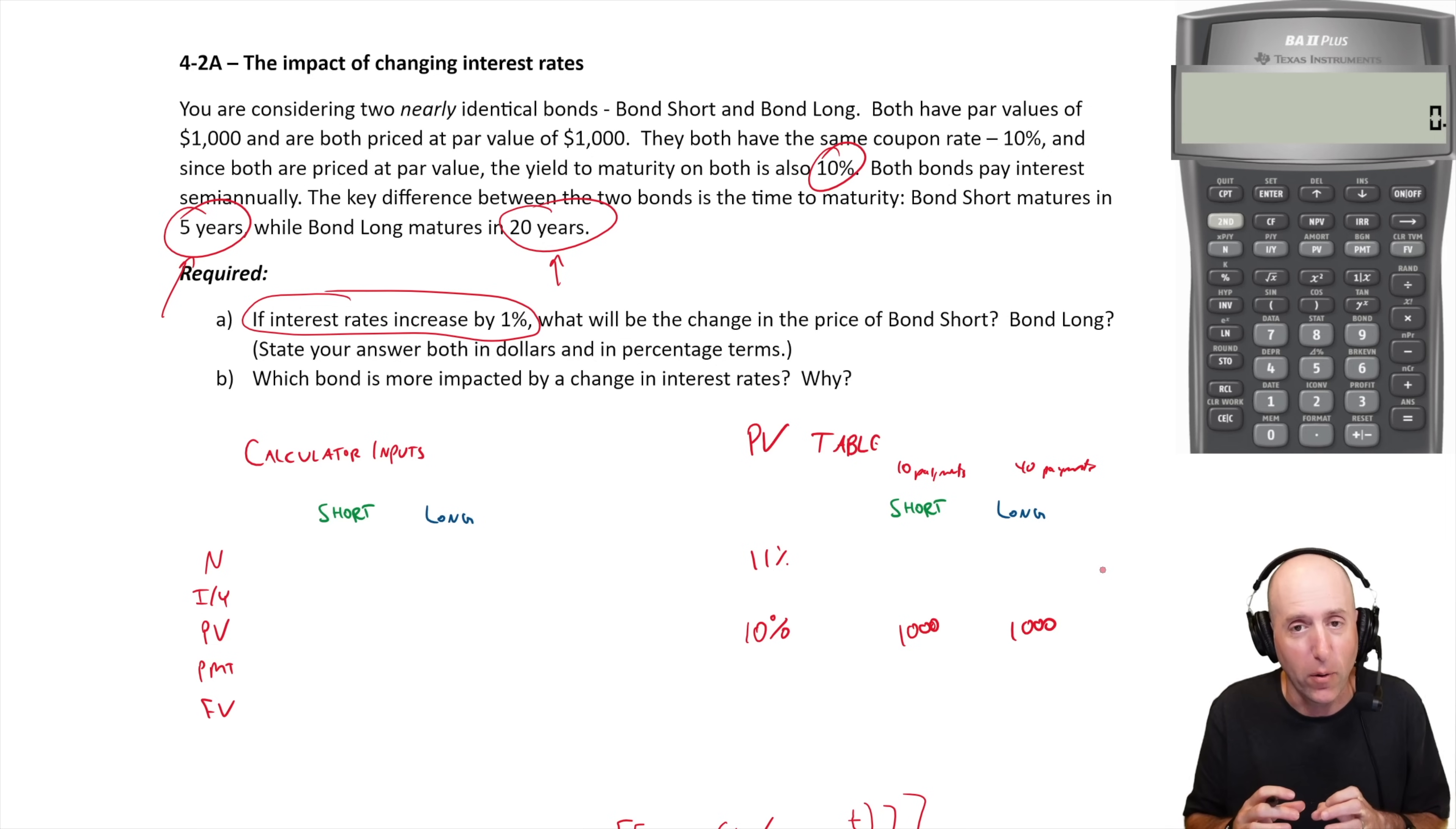The prices of these bonds are both going to come down a little bit because the market rate of interest goes up. Let's figure out the price. Let's do short first. Number of periods, these are five year bonds, so the number of payments is 10. Our IY was 10, it's now 11, but remember we divide by two for bonds, so 5.5.